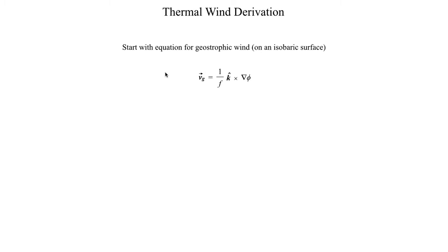Deriving thermal wind is going to have some sort of basis in geostrophic wind. In this specific case, I'm going to be using the geostrophic wind for an isobaric surface because that's a little bit simpler to work with than the geostrophic wind on a constant height surface, where you have this extra factor of rho in the denominator. Just to keep things a little bit simpler, we'll go ahead and use this definition of the geostrophic wind.